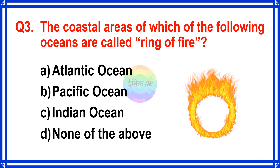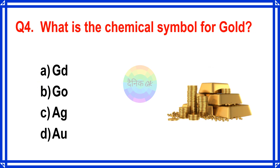The coastal areas of which of the following oceans are called the Ring of Fire? The correct answer is Option B. Pacific Ocean.